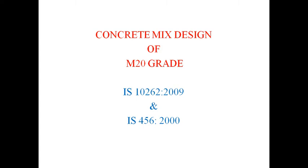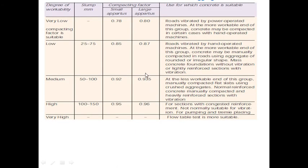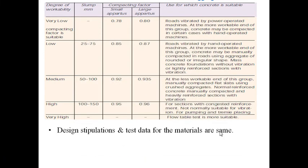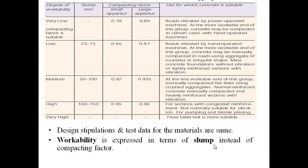Now carrying out concrete mix design for M20 by IS 10262:2009 (the revised code) and IS 456:2000. In IS 10262:2009, workability is not expressed in terms of compacting factor — it must compulsorily be expressed by slump value only, unlike the 1982 code which used compacting factor.